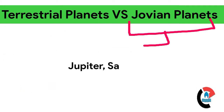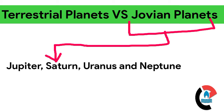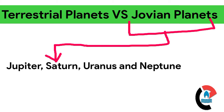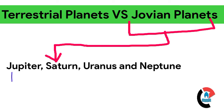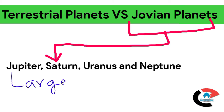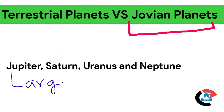Jupiter, Saturn, Uranus and Neptune are the outer planets, also called jovian or Jupiter-like planets. Because these are large in size, all outer planets are also called gaseous planets because they have an atmosphere of hydrogen and helium.